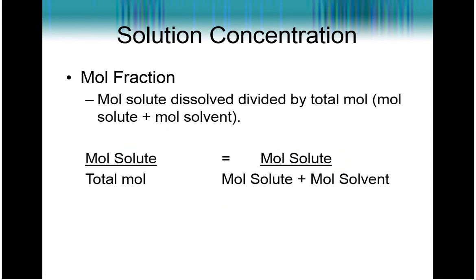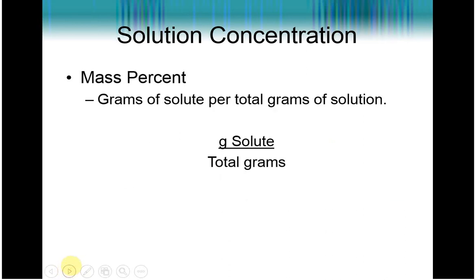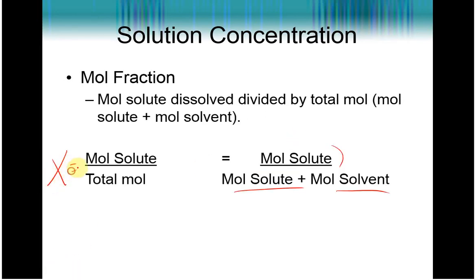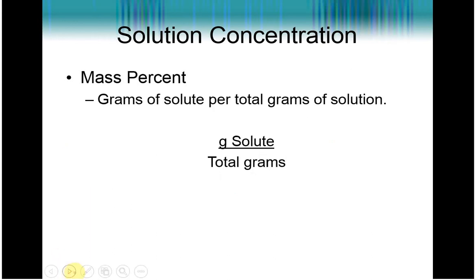Mole fraction is the number of moles of solute that are present over the total moles. Now, because total moles means you have to consider both solute and solvent, you can kind of think of it as the moles of solute over moles of solute plus moles of solvent. Mass percent is very similar. It's going to be the grams of solute over the total grams of the entire solution, which again is solute plus solvent here. Mole fraction is represented by the capital X. Mass percent is usually M over M percent, kind of like that, but we don't really use that until much later.